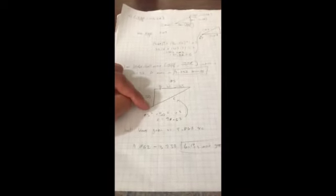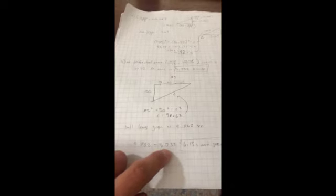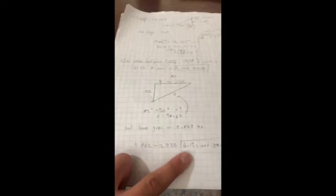Sorry, what I meant to say is that this point is 9.862 seconds away from its original point. And then we do 9.862 seconds minus where it originally entered the green, and we get 6.15 seconds inside the green.